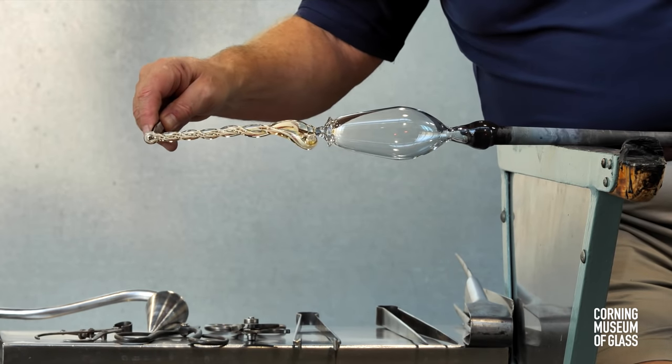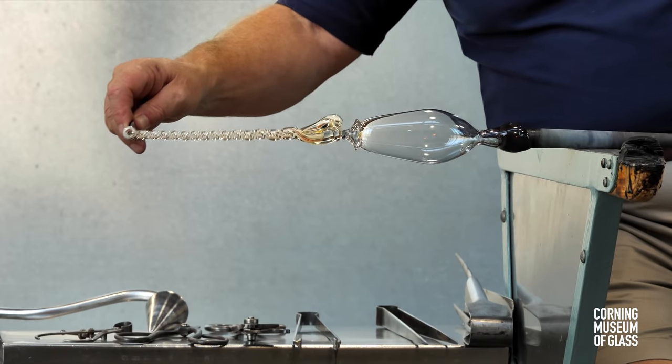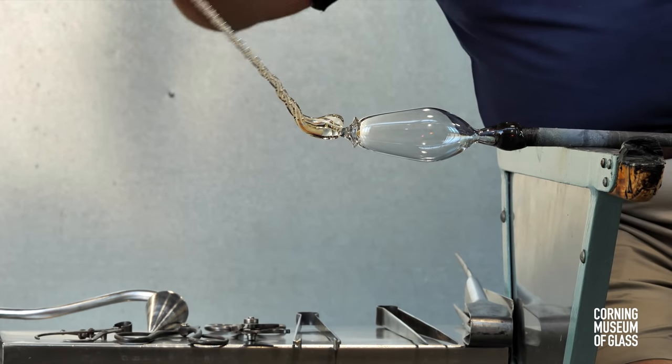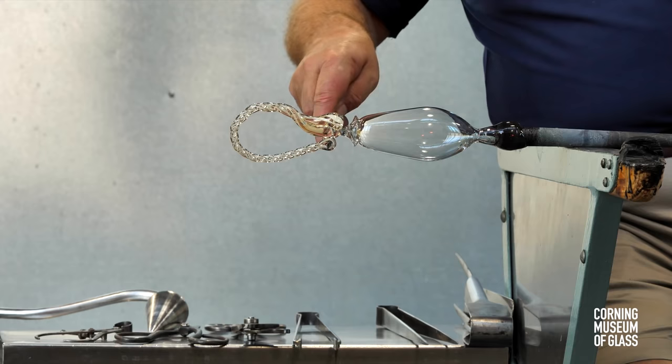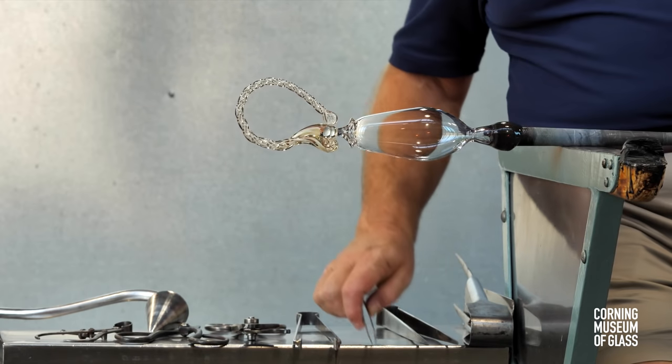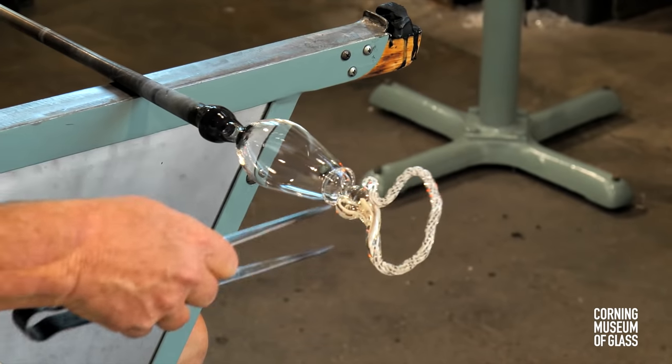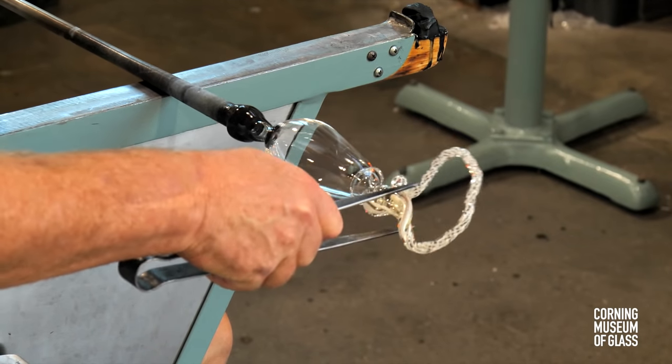The end is held, pulled outward, and twisted. Touched opposite the first contact point. And after reheating, a loop is formed.